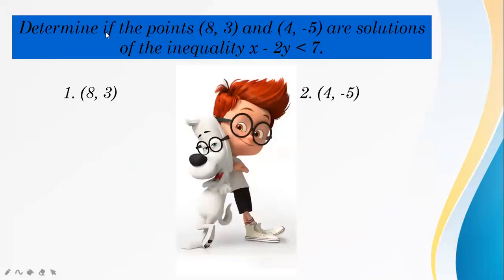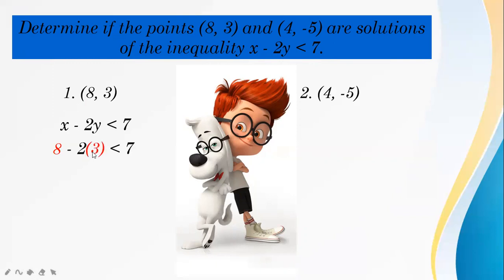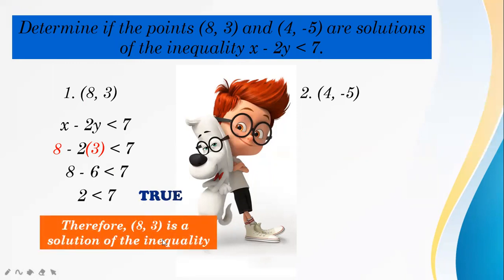Another example: determine if the points (8, 3) and (4, -5) are solutions of the inequality x minus 2y less than 7. For (8, 3): substituting x equals 8 and y equals 3 gives 8 minus 2 times 3 less than 7, which is 8 minus 6 less than 7, that is 2 less than 7. The statement is true, so (8, 3) is a solution of the inequality.